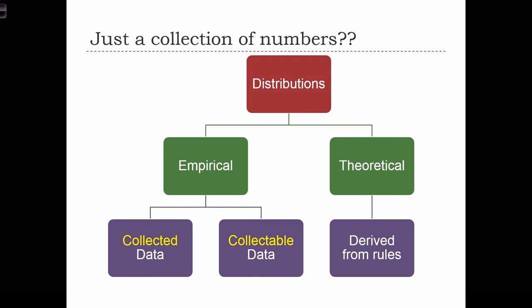On the empirical side, we can differentiate between collected data and collectible data. We might go out and collect a sample of people and therefore have a distribution of the age of our sample. Now, we might not have the distribution of age for the entire population that we're interested in, but that is technically still some sort of collectible empirical data.